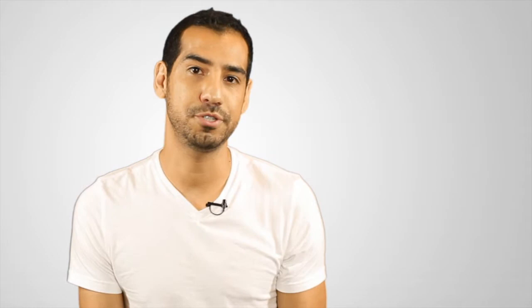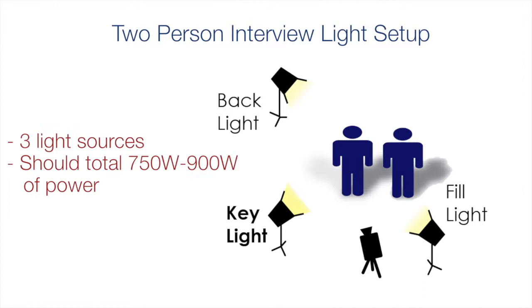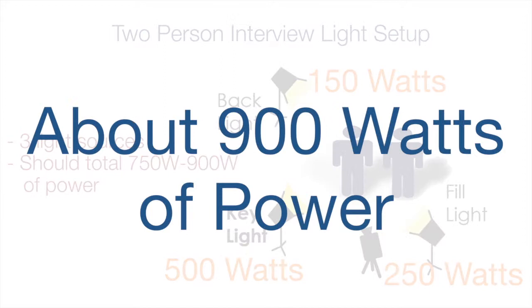Now, just like Kelvin measures the color temperature of your light kit, light intensity is measured in watts — basically the amount of light pushed out of a bulb, giving your set an appropriate amount of lighting. Every set is different, but let's take an interview shoot with two people in the shot. In this situation, I'd recommend at least three light sources totaling between 750 to 900 watts. One light would be pushing 500 watts, the second around 250 watts, and the third about 150 to 250 watts — equating to right around 900 watts.